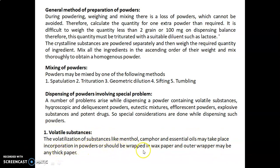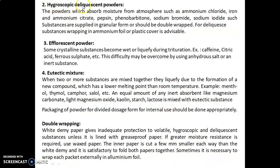Volatile substances should be incorporated in the powders wrapped in wax paper with an outer wrapper of thick paper. For hygroscopic and deliquescent powders — substances that absorb moisture from the atmosphere such as ammonium chloride, iron and ammonium citrate, pepsin, phenobarbitone, sodium bromide, and sodium iodide — these should be supplied in granular form or double-wrapped; wrapping in aluminium foil or plastic cover is advisable. For efflorescent powders, some crystalline substances become wet or liquefy during trituration, for example caffeine, citric acid, and ferrous sulphate. This difficulty may be overcome by using the anhydrous salt or an inert substance.